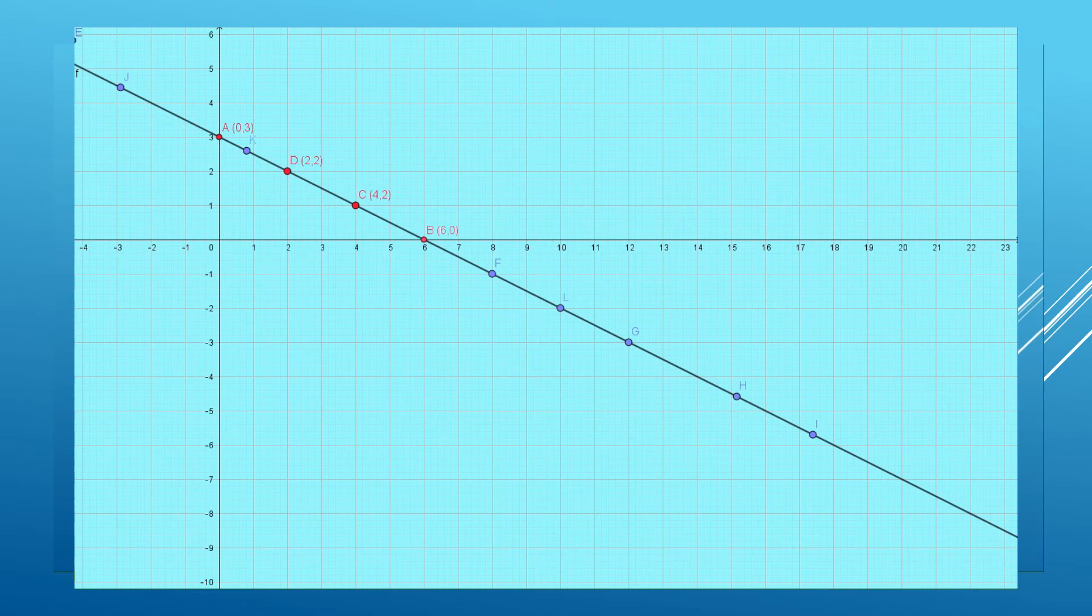All those points that are lying on this line are the solutions of this equation x plus 2y equals 6. If any point that will be lying outside, suppose this point M which is having the coordinate (2, -3), is not a solution of this equation. That means if I put the value of x as 2 and y as -3, I will not get 6. It won't satisfy the equation. When you are writing the ordered pair, you should always remember the first value stands for x and the second stands for y.